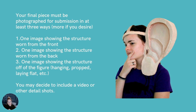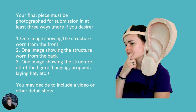Your final piece must be photographed for submission in at least three ways: one image showing the wearable extension worn from the front, one image worn from the back, and one image showing just the wearable extension on its own — hanging, propped on something, or lying flat. You may also want to include a video of you or someone else wearing the extension if appropriate. If your piece has movement or showing it in action would help solidify the concept, include a short video.